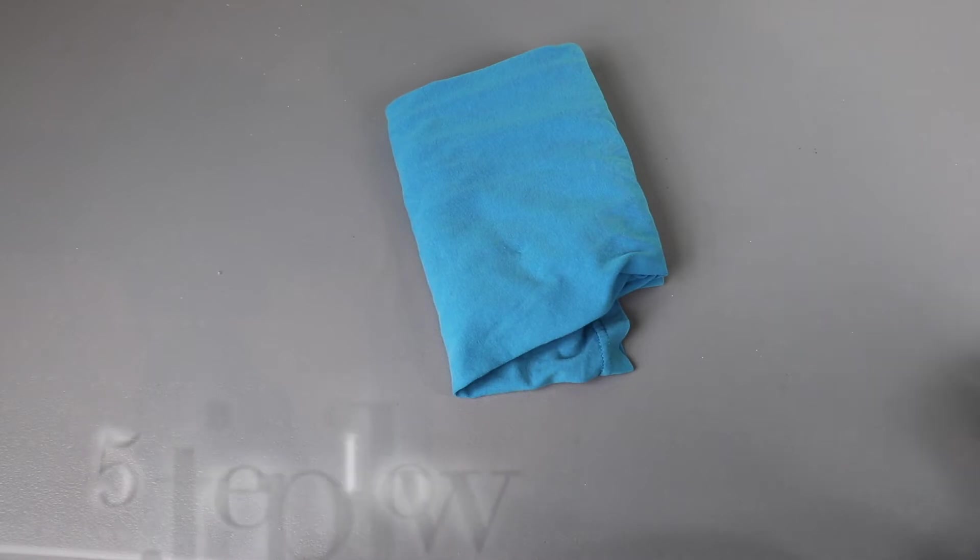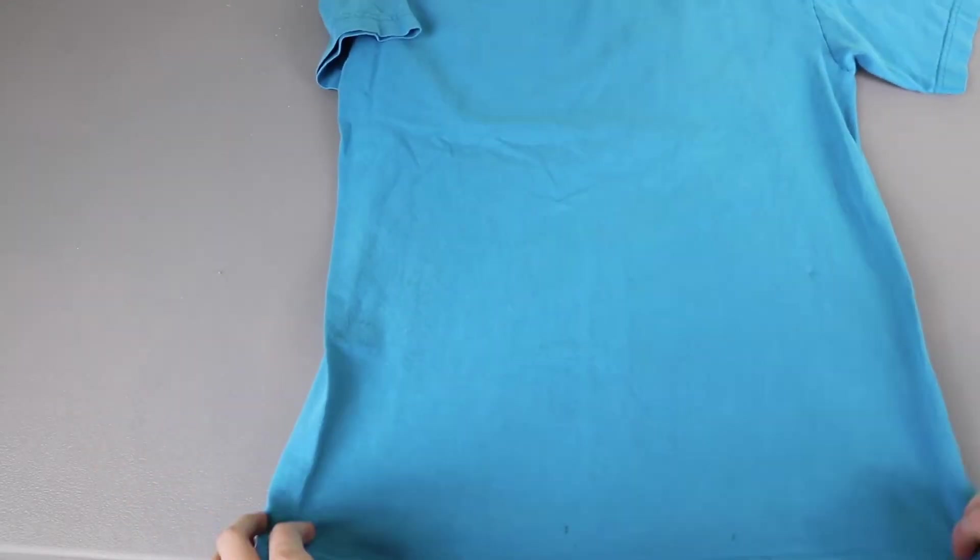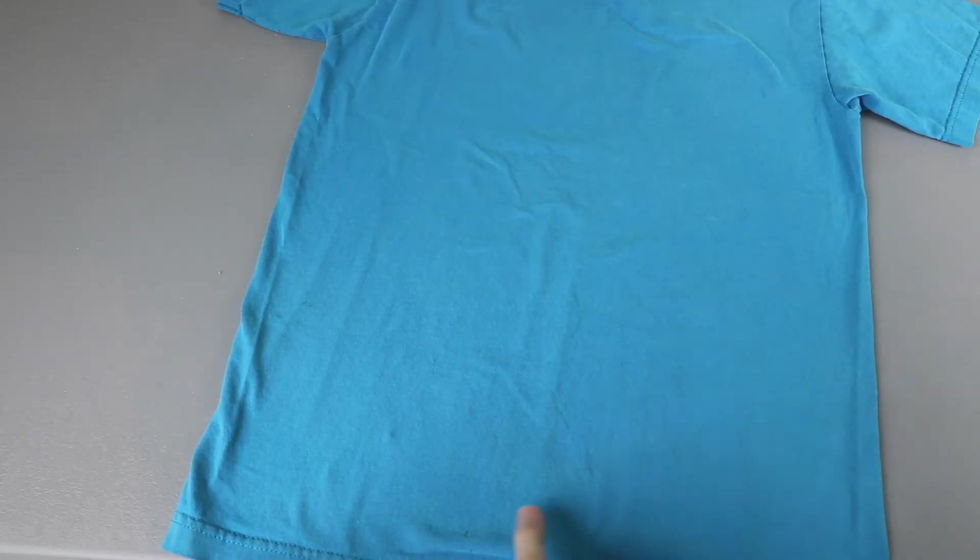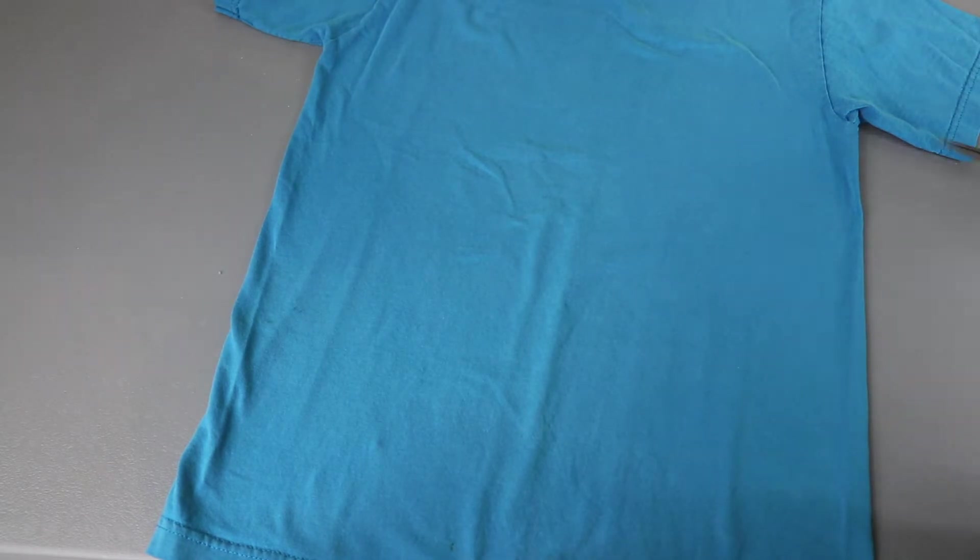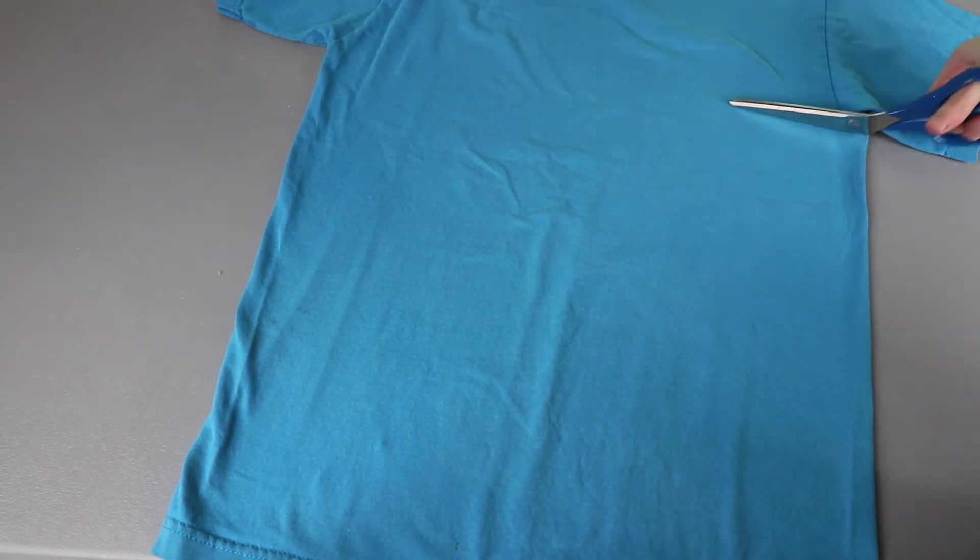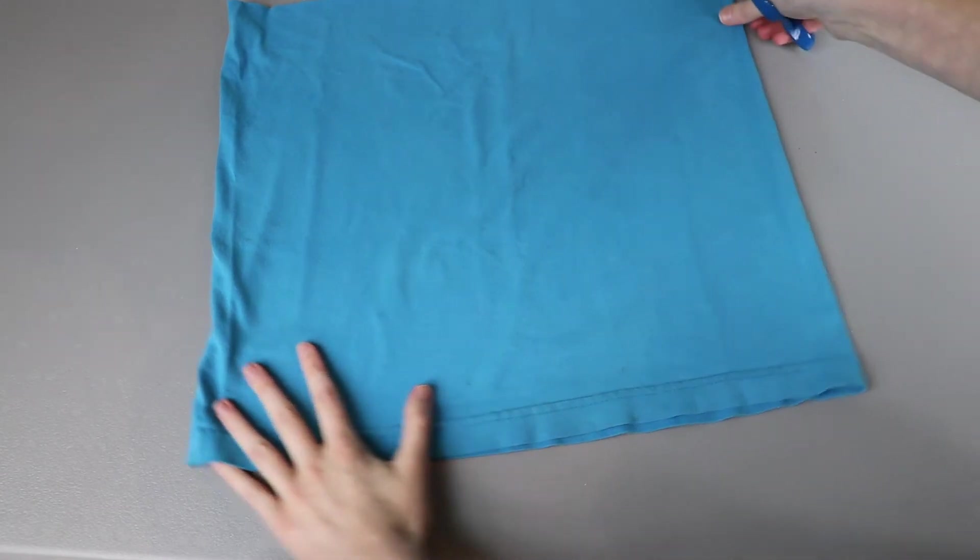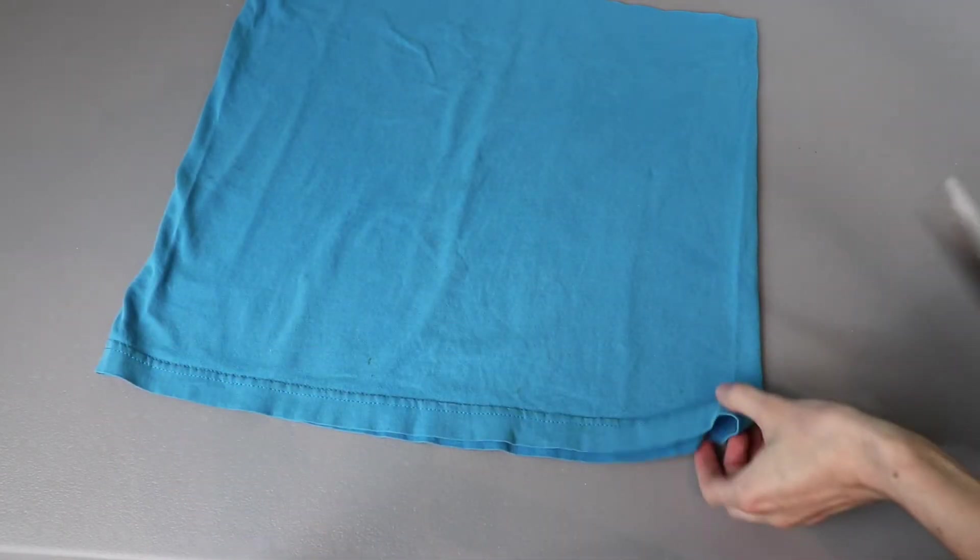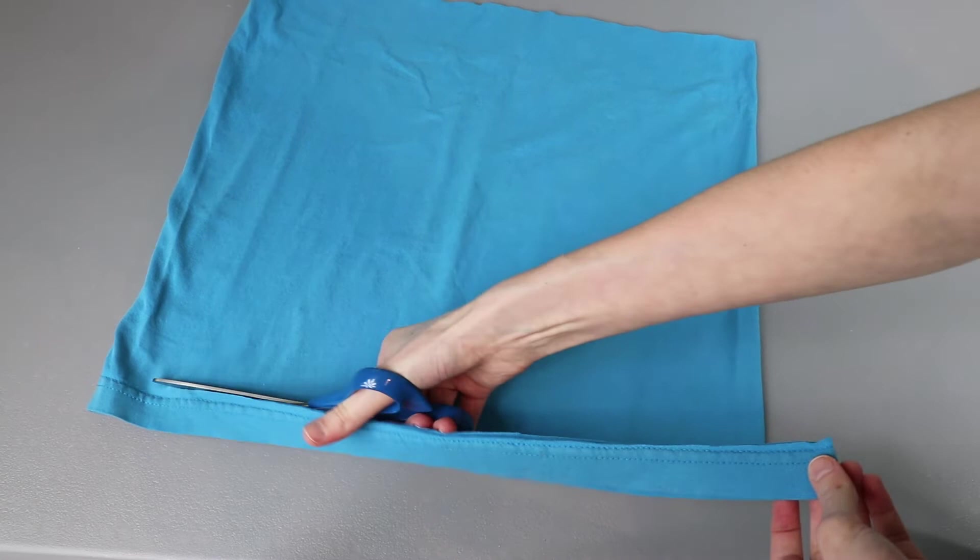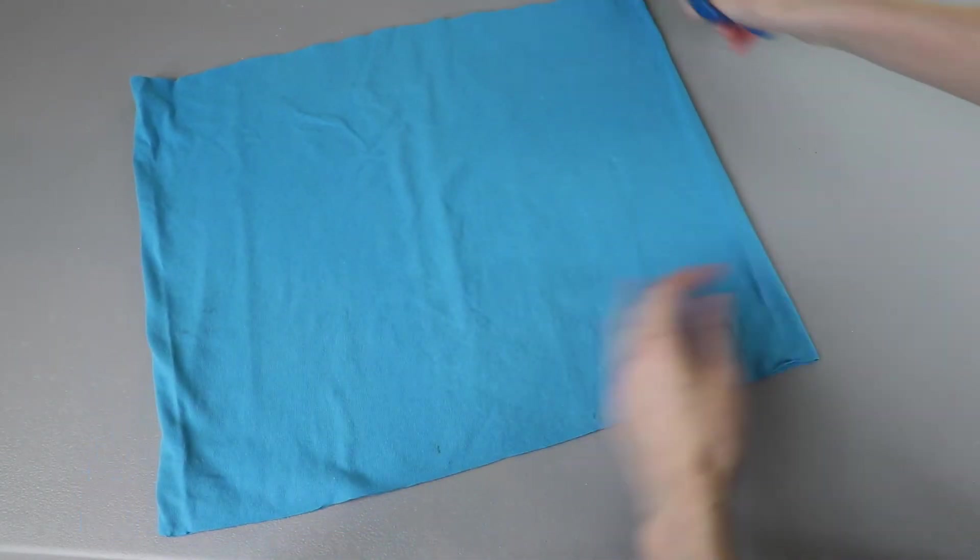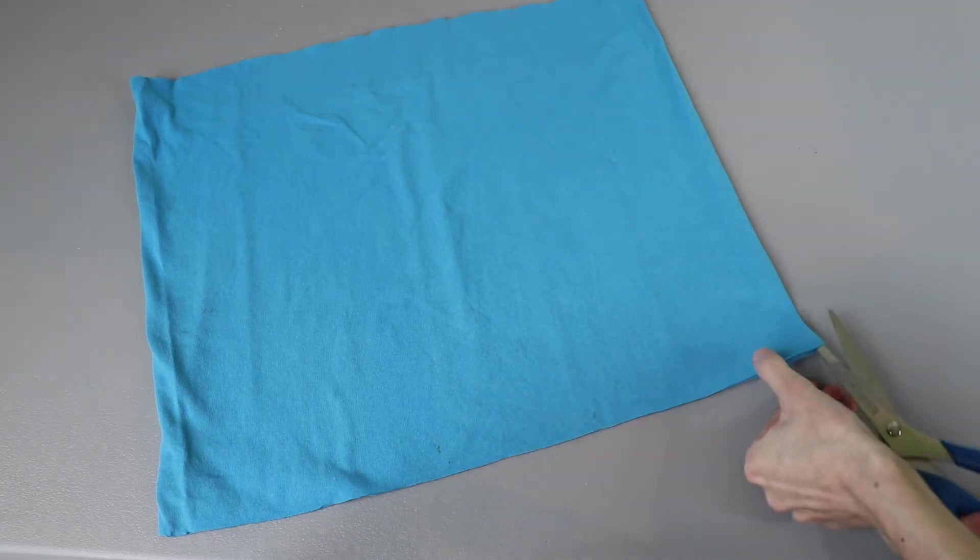For our last project we're going to turn a t-shirt into an easy tie pillow. The first thing we need to do is figure out how big we want our pillow to be and then leave two extra inches all the way around. For me I'm not going to actually do any measuring. I'm just going to cut this top here off. And I'm also going to cut the bottom off so that we don't have the thicker hem. And now I've got this big rectangle tube and to turn into two separate rectangles I'm going to cut each side where there's this fold.